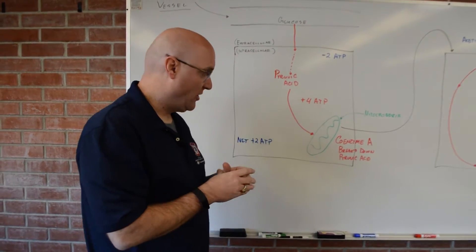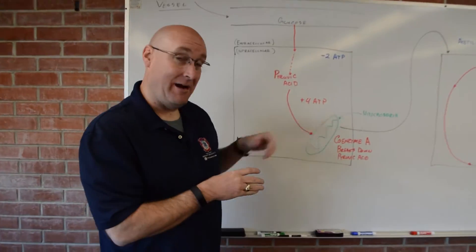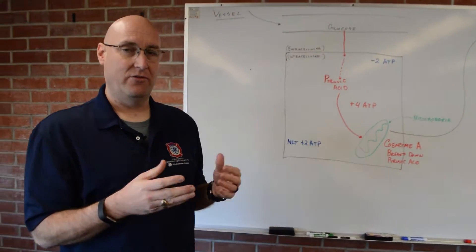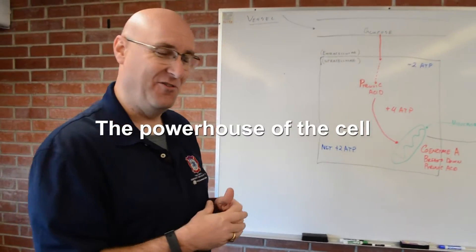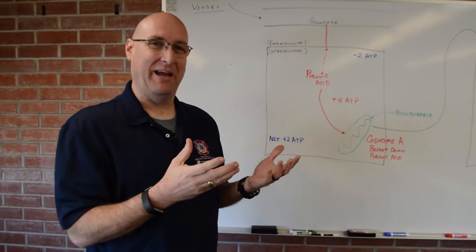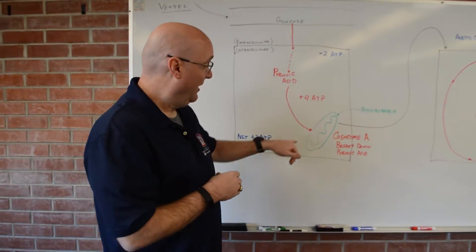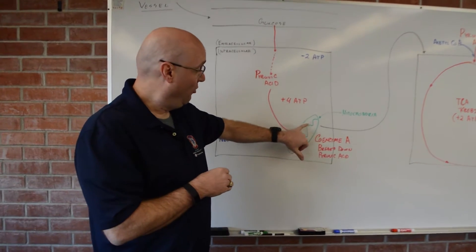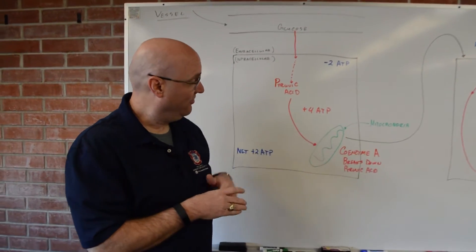So that pyruvic acid is broken down, it's smaller, it can enter the mitochondria. And the mitochondria, as you know, is the powerhouse, is the electric power plant of our cell. And that's where we get most of our energy.